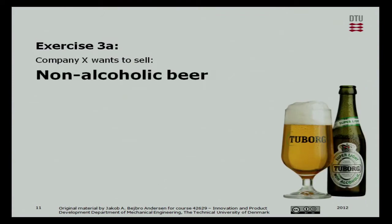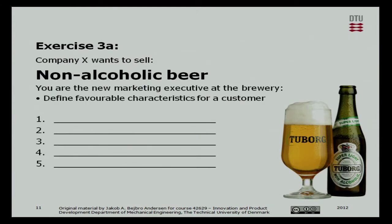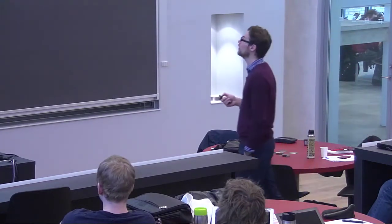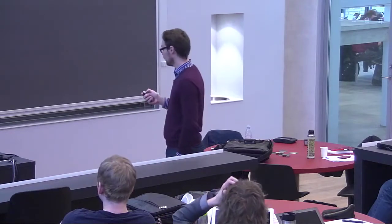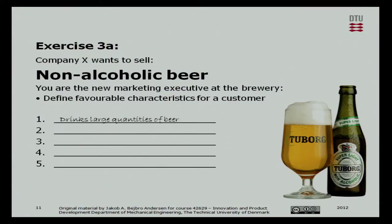This is the case we'll be using for the rest of the day: Company X wants to sell non-alcoholic beer. I think this is a bit of a stretch for DTU students in general, but I think that's what makes it interesting. What we need to figure out is the characteristics of a perfect customer for this company. It would be nice if this customer drinks large quantities of beer, cannot or may not drink alcohol for some reason, and also from a business perspective, it would be nice if they were part of a defined group. What else can we think of?